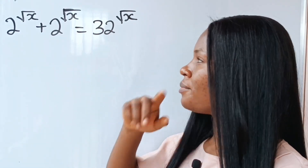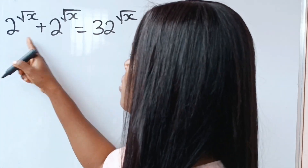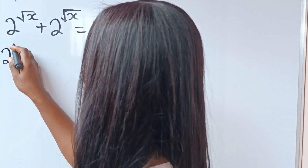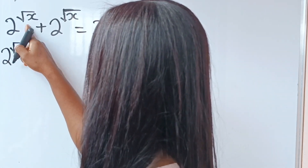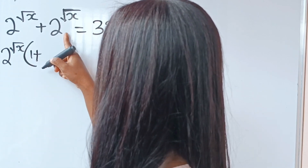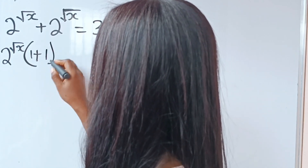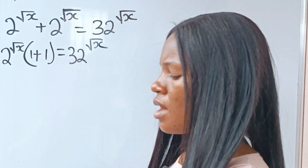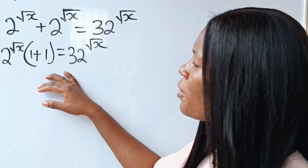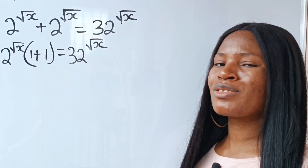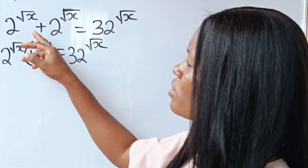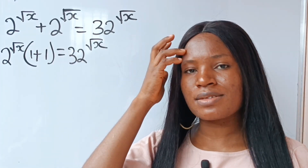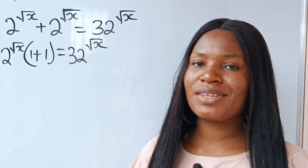We need to solve for the value of x. On the left hand side of the equation we have 2 to the power of root x. When this is divided by itself we get 1, and this equals 32 raised to the power of root x. The intention of the video is to find the value of x, and we'll substitute back into the equation to prove that the left hand side equals the right hand side.